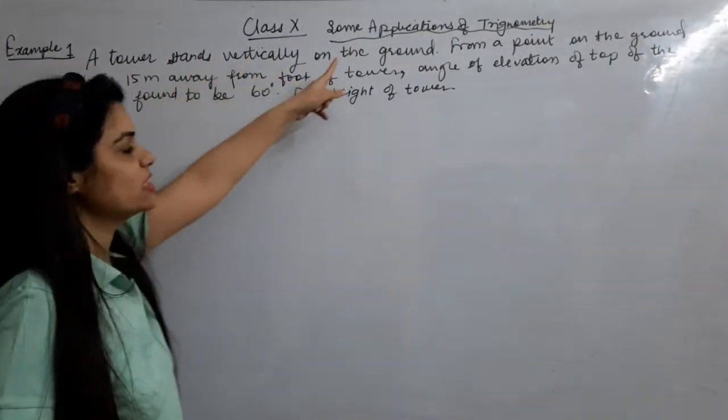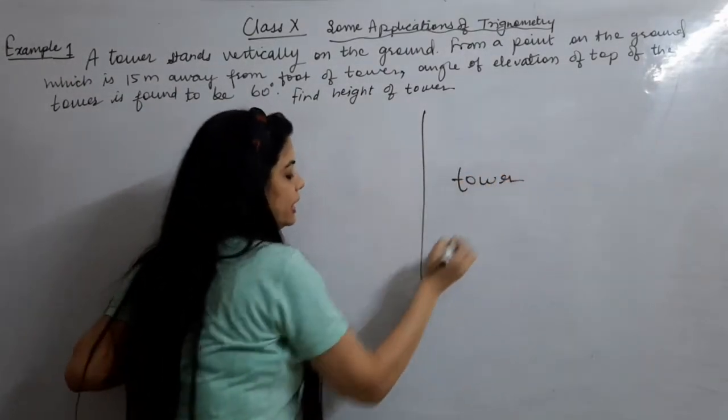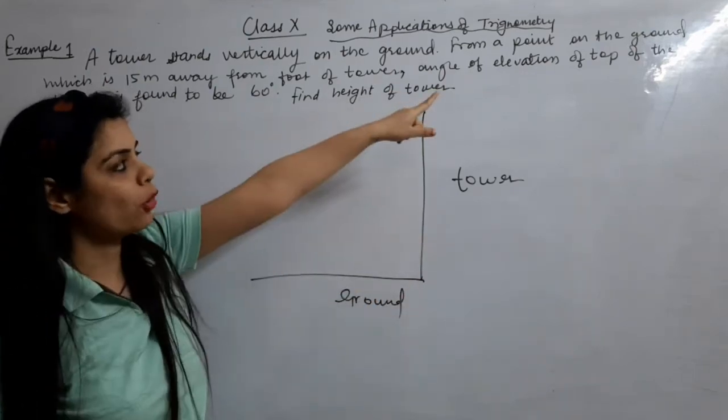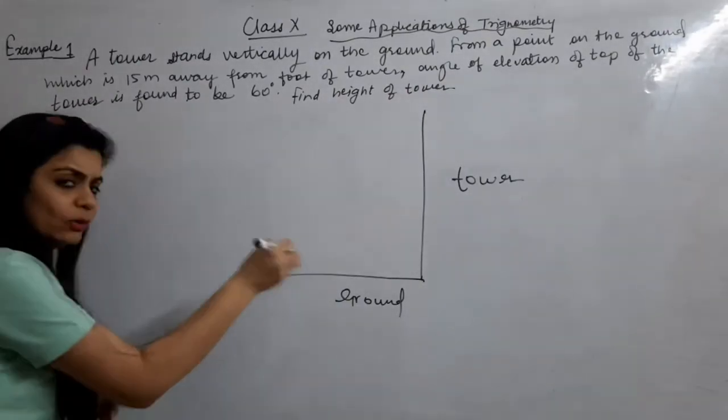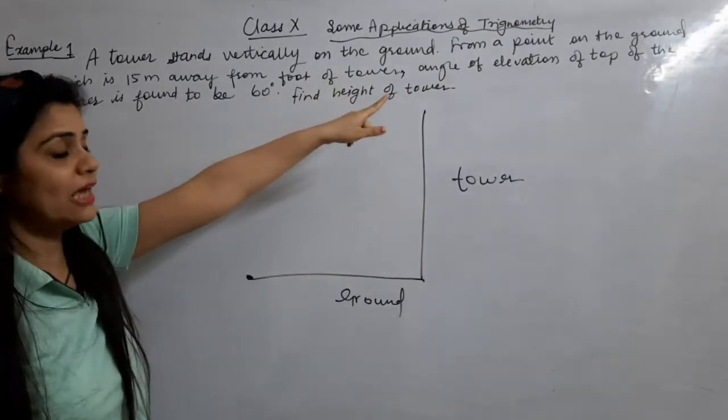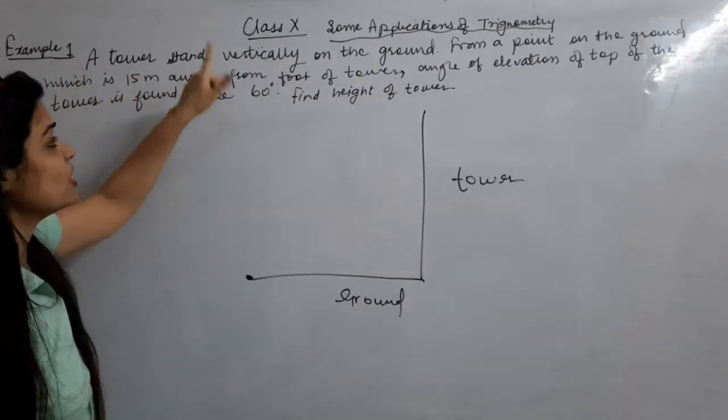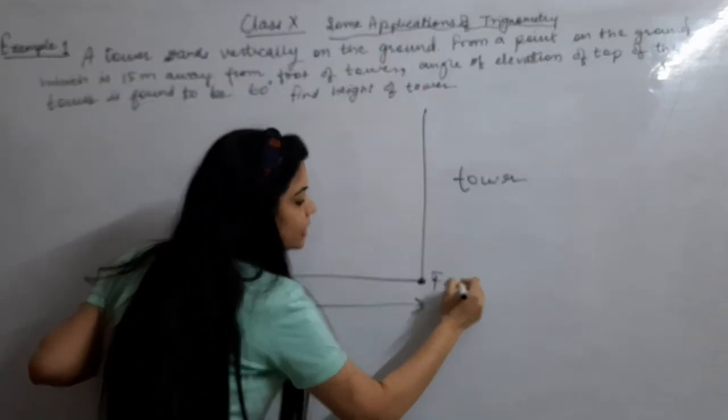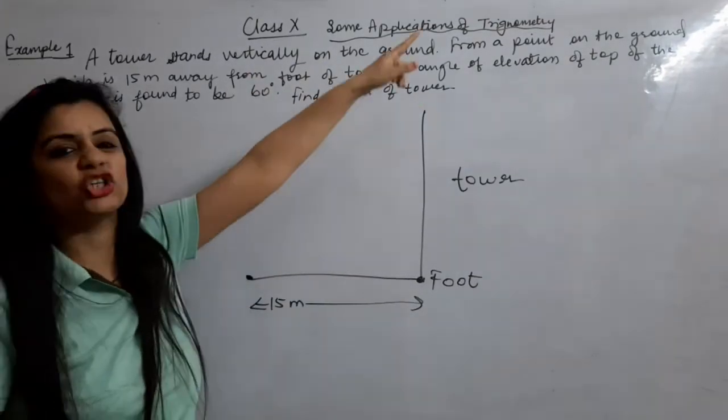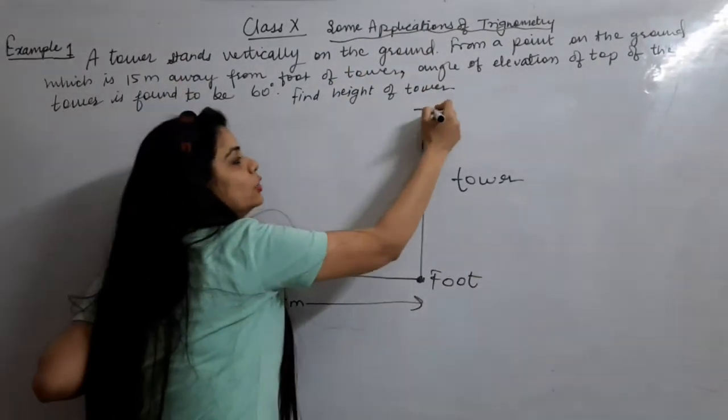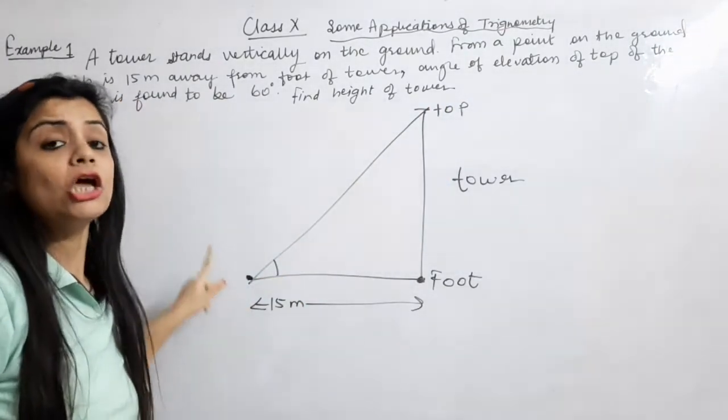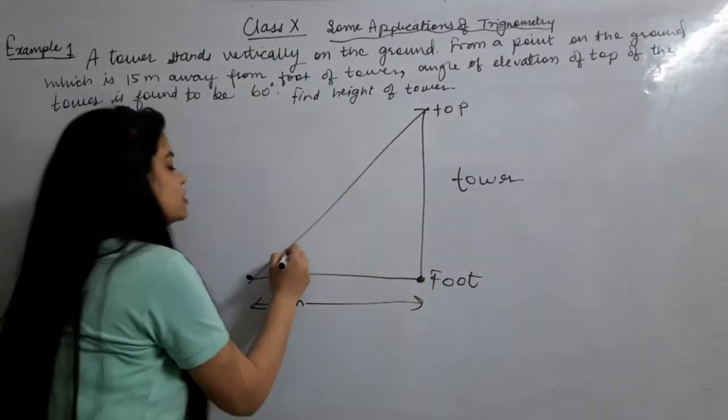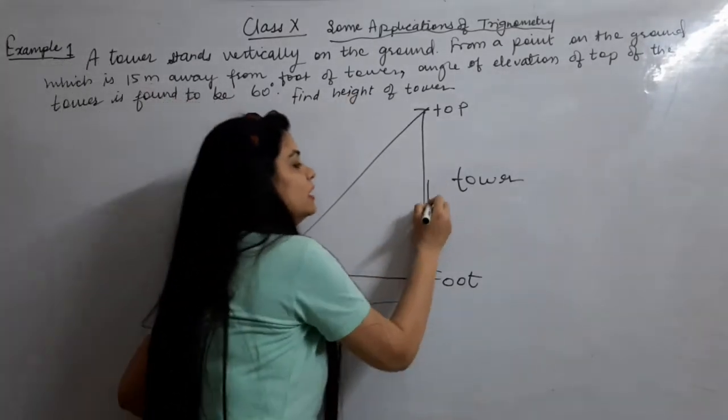Let's see. A tower stands vertically on the ground. This is my tower. And this is my ground. It is a tower, which is on the ground. From a point on the ground, at some point, that point which is 15 meter away from the foot of the tower, the angle of elevation of the top of the tower, from this point which is 15 meter far from the foot of the tower which is given to be 60 degree. Find the height of the tower.